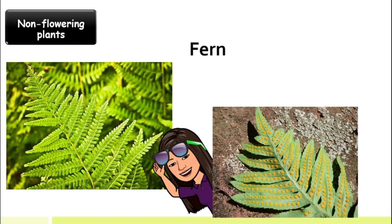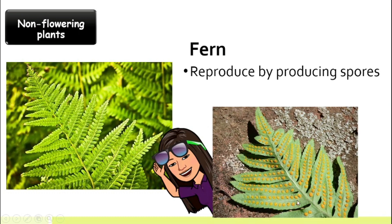How about the fern? Can you see all those little dots behind their leaves? Those are actually the spores. So, just like moss, ferns reproduce by producing spores. But different from moss, it is very easy to identify the leaves, stems, and roots of a fern. So, ferns are vascular.